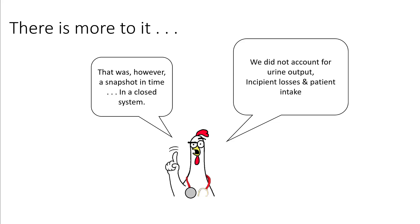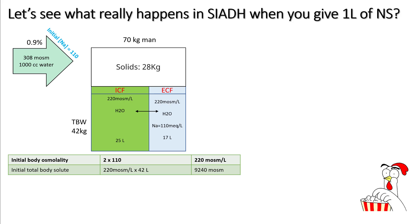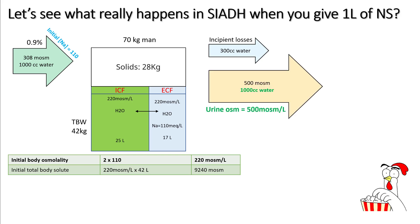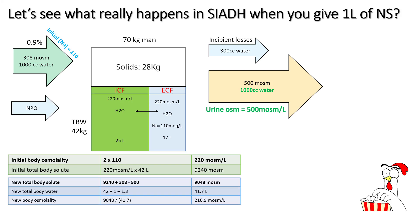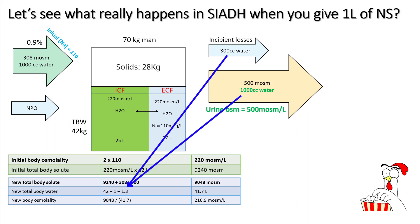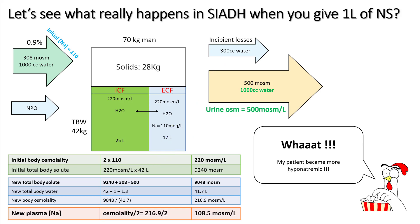Now let's combine all factors. Assume this SIADH patient received one litre of saline over 24 hours, urinated one litre, and had 300 cc of insensible losses, with urine osmolality of 500 mOsm/L. Total body solute starts at 9,240; add 308 from the saline and subtract 500 lost in urine. New total body water is 42 + 1 − 1.3 litres. The resulting sodium is now 108.5 mEq/L — the saline actually dropped the sodium.